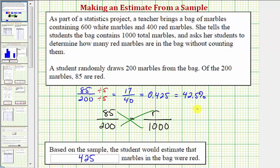Well, 200 times r is 200r, equals 85 times 1,000 would be 85,000. And now to solve for r, we would divide both sides by 200.